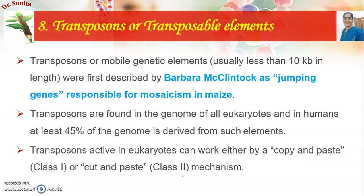The next and last type of vector in this video is the transposon, or transposable element. Transposons are also named mobile genetic elements. They were discovered by Barbara McClintock and are also called jumping genes; they are responsible for mosaicism in maize. Transposons are found in the genome of all eukaryotes, including human beings — at least 45 percent of the human genome is derived from transposon elements. Transposons are active in eukaryotes and can work by either a copy-and-paste or cut-and-paste mechanism, and on this basis they are divided into two classes.